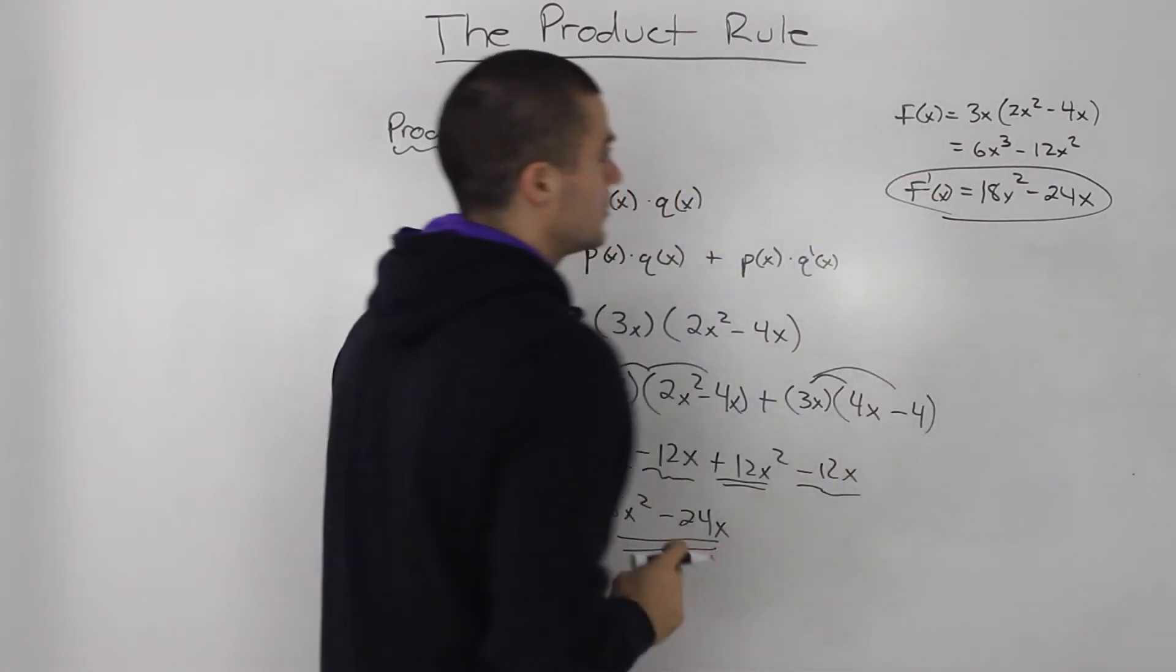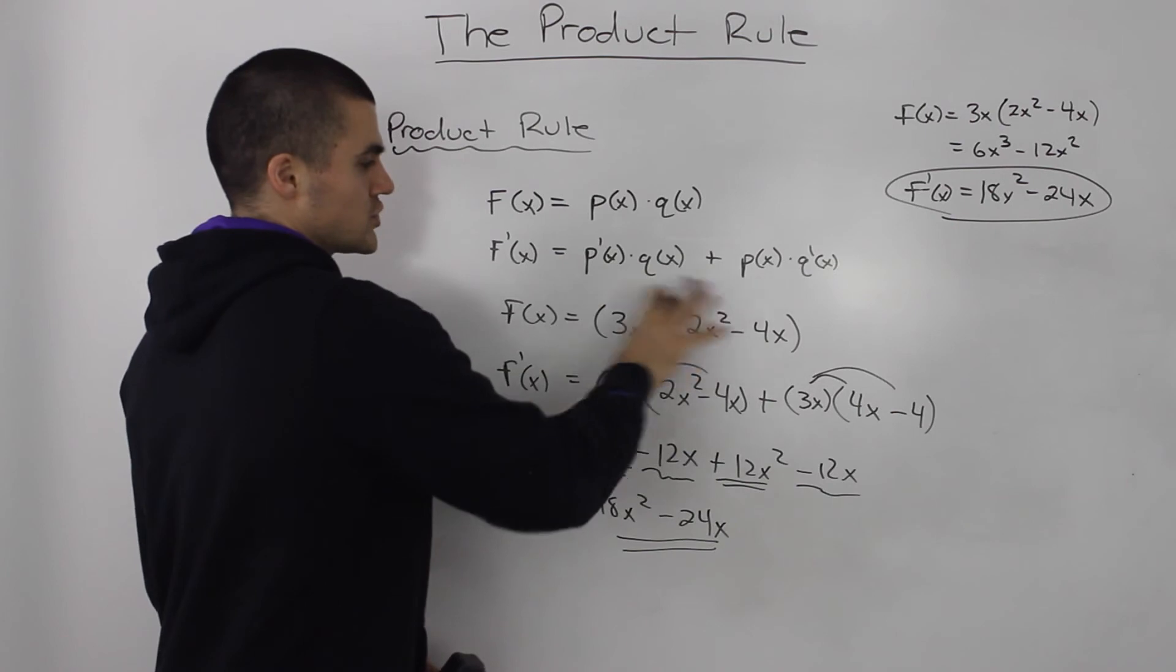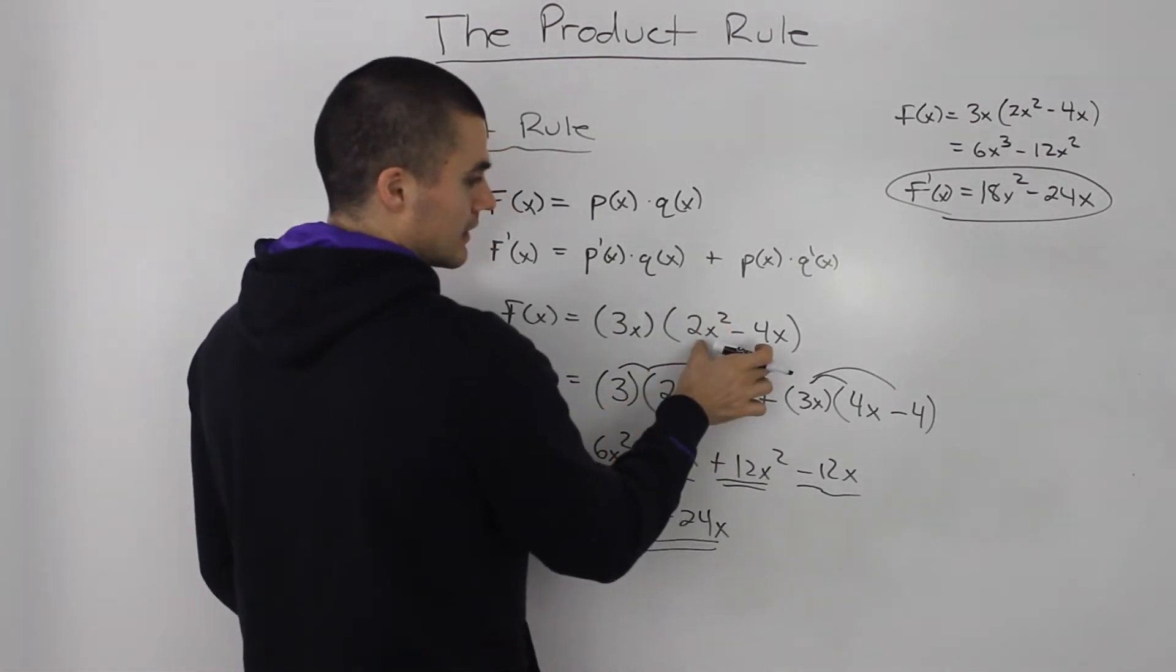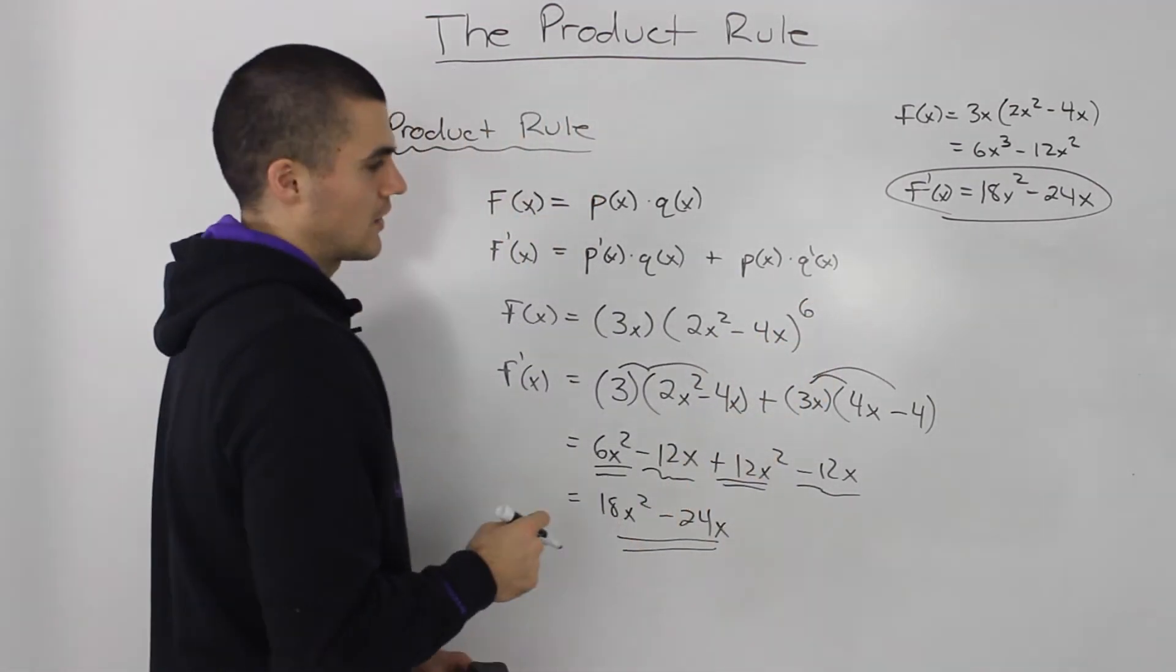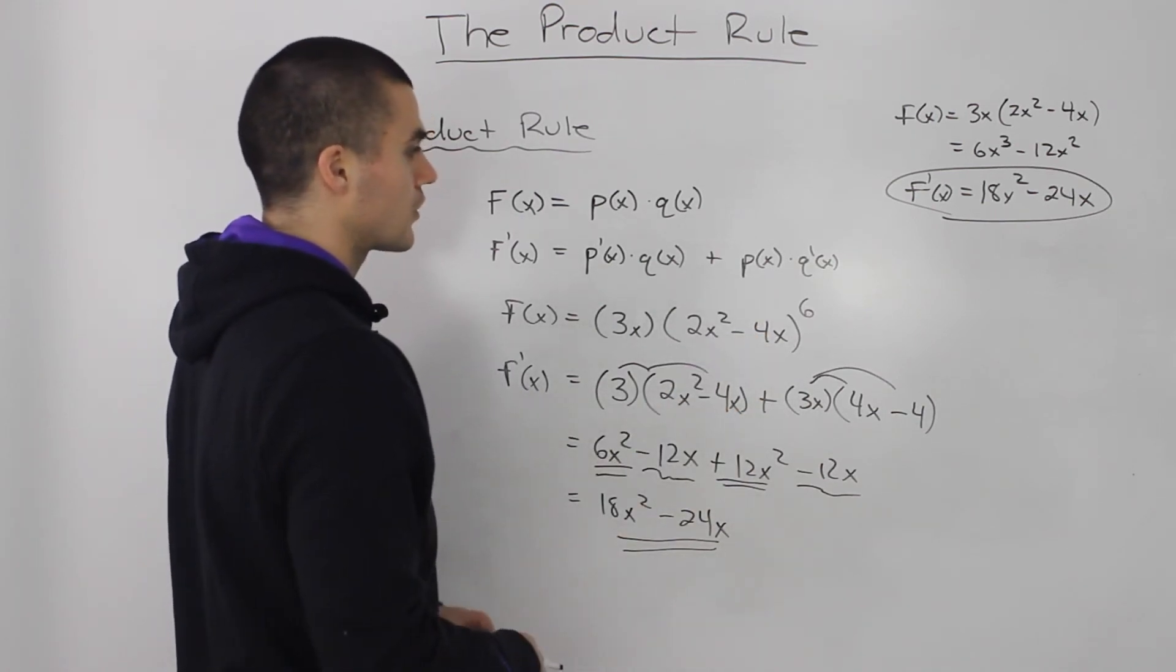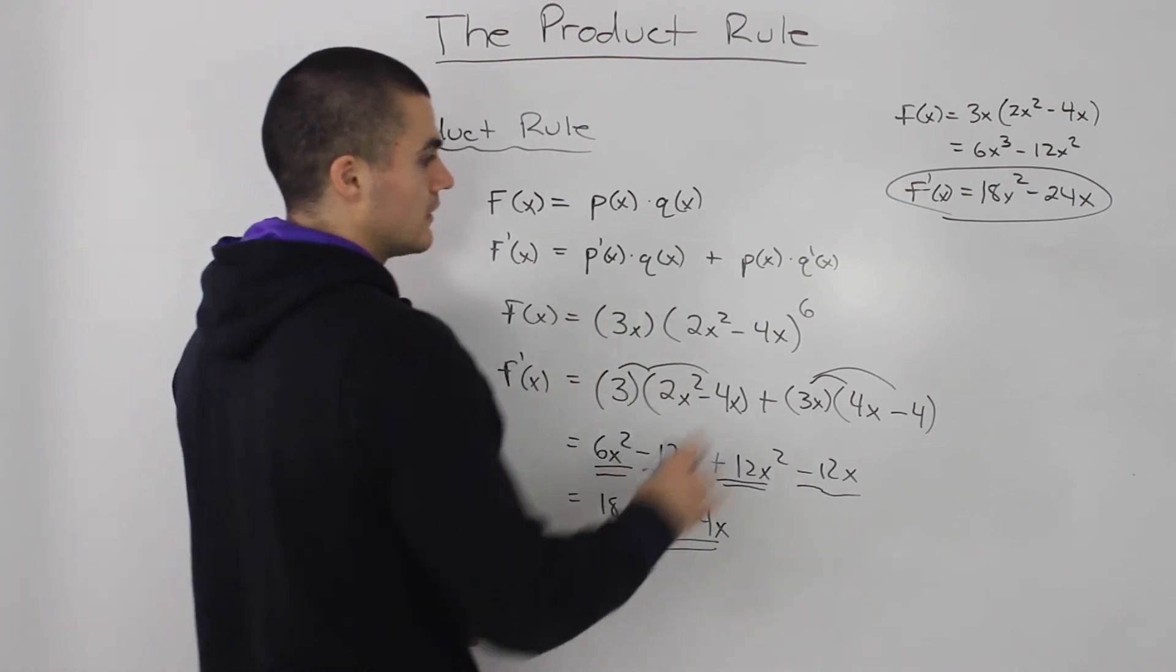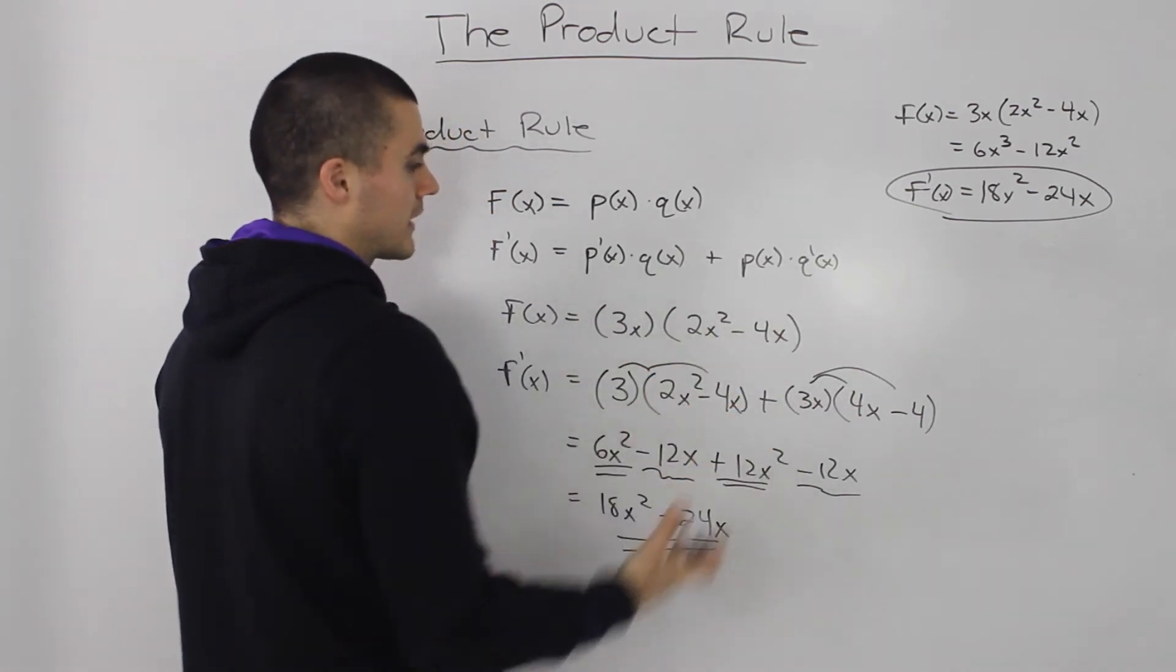Which seems like it's easier to do, and it is in this case, but the functions for product rules will get a lot more complex. They'll have something like, this second function will have maybe a 6 there. And then, obviously, you're not going to expand it with a power of 6, that'll take you forever. So you would use the product rule then. I was just doing a simple example just so you could see how the mechanics work.